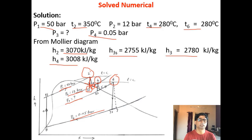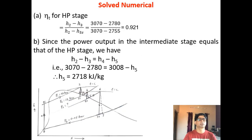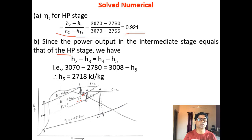From point 2, come down to intersect the 12 bar line and note H3S. Go along the 12 bar line to meet the dry saturation line (since HP turbine exit is dry saturated) and note H3. Then go along the 12 bar line to the 280 degree Celsius line to note H4. H5 and H6 cannot yet be marked because P3 is unknown. HP turbine efficiency is (H2 − H3) / (H2 − H3S) = 0.921. Since power output of the intermediate stage equals the HP stage, H2 − H3 = H4 − H5, so H5 can be calculated.